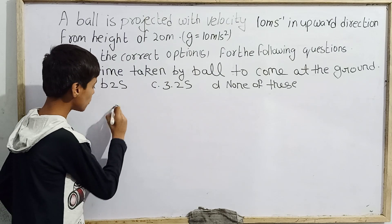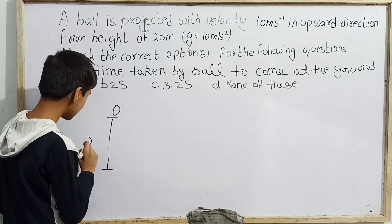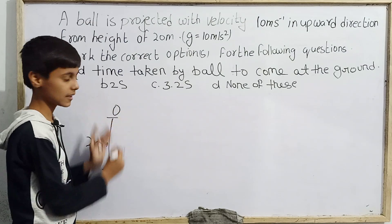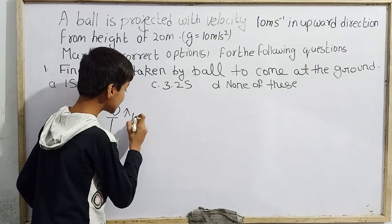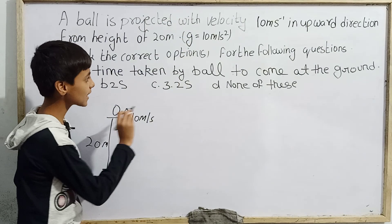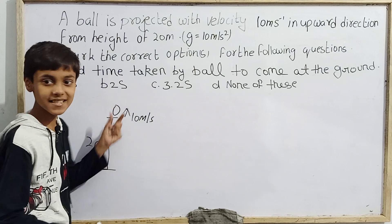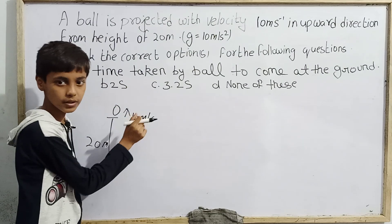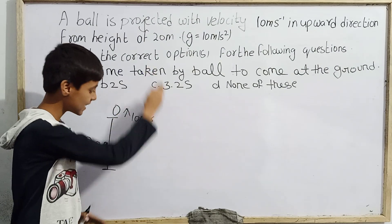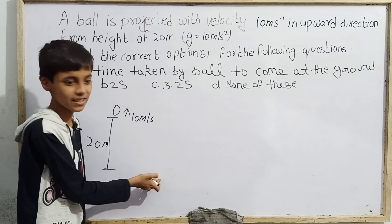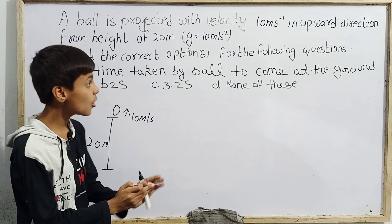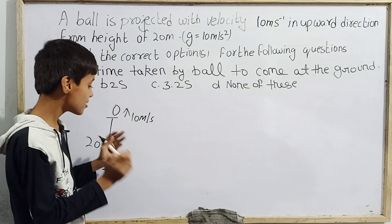The ball is kept at a height of 20 meters, and from the top of this height we throw it with 10 meters per second in the upward direction along the Y axis. After being thrown, the ball reaches some maximum height where its velocity becomes zero, then it starts returning and falls directly to the ground. We have to find how much time it takes to fall to the ground.